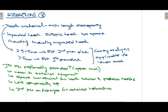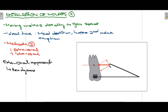First premolars are more commonly extracted, especially in the upper arch, for four reasons: it is closer to the anterior segment so the space benefits both anterior and posterior teeth; it is aesthetically less important than the second premolar; the second premolar can then be used for anchorage during retraction of anterior teeth; and the available space can be used to adjust both anterior and posterior segments.